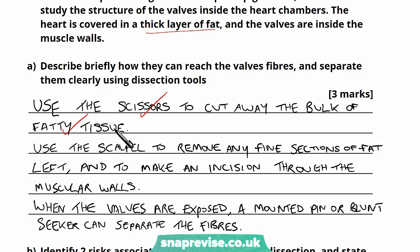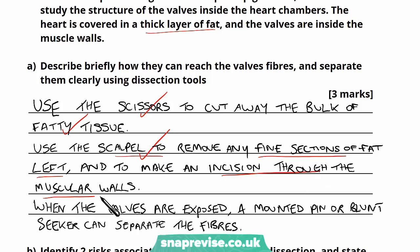Once we've gotten rid of the bulk, use the scalpel to remove any fine sections of fat left, and then to make an incision through the muscular walls. We know the heart is a muscular organ, and the question states that the valves are inside the muscular walls. So we need to cut through the muscular walls in order to access them because they're within the heart chambers.